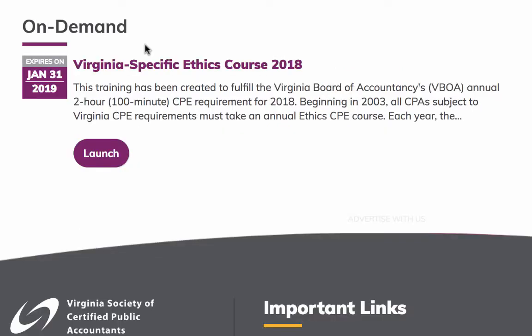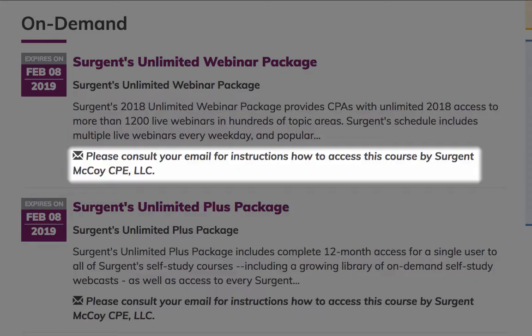On-demand courses may be launched any time prior to their expiration, which is either a full year from the date of purchase, or, in the case of the Virginia-specific ethics course, January 31st at 10 p.m. of the subsequent calendar year. Certain courses may only be accessed by referring to instructions sent by the provider and are noted accordingly.